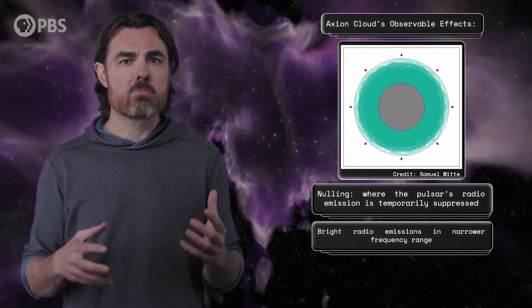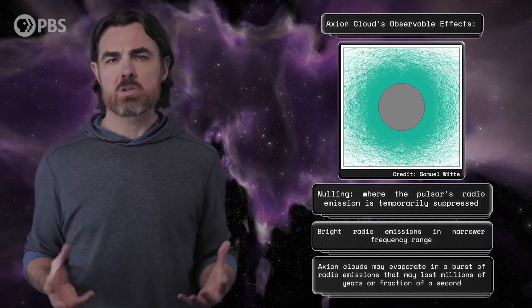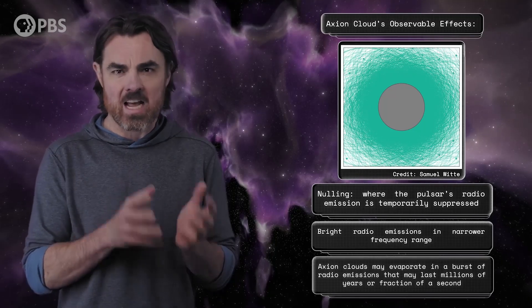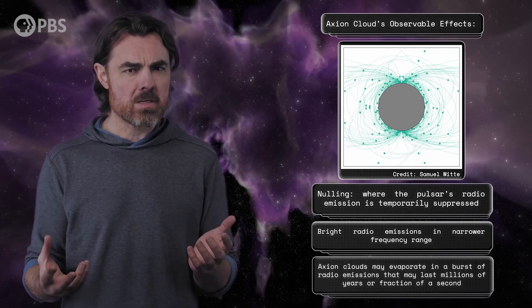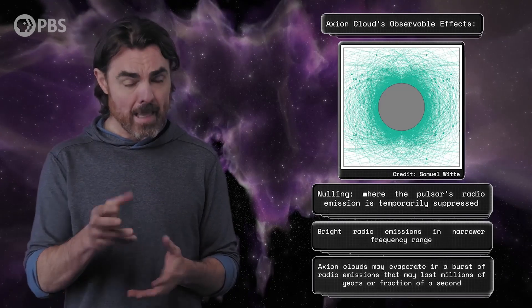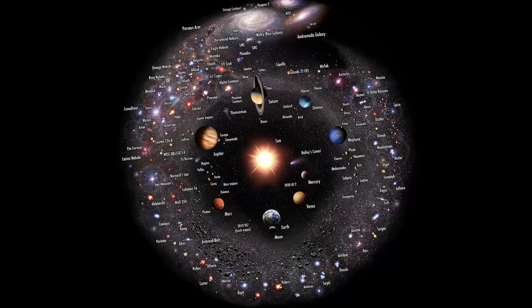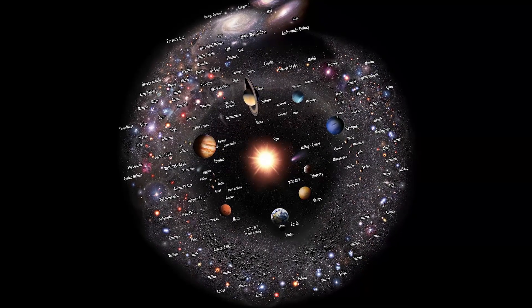That axion cloud might have a few observable effects. One: they might explain another mysterious phenomenon called nulling, where the pulsar's radio emission is temporarily suppressed. Two: they might result in bright radio emission, which I already told you we don't see in neutron stars, but the radio light from these captured axion clouds would have a much narrower frequency range, and it may have rendered it undetectable in past searches. Three: when a neutron star's magnetic field eventually fades out over tens to hundreds of millions of years, these axion clouds may evaporate in a burst of radio emission that may last millions of years or may only last a fraction of a second. If the latter, the models showed that these would bear a striking resemblance to the mysterious fast radio bursts, distant and stupendously bright radio flashes that have perplexed astronomers for years.